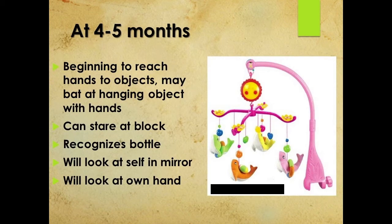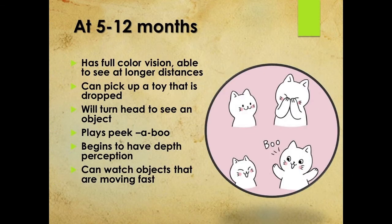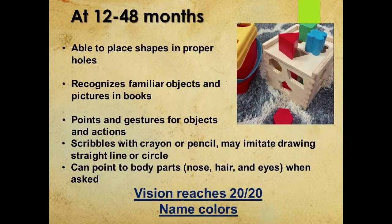At four to five months, the baby becomes much more aware of the environment. They can follow a moving toy or a rolling ball, and hand-eye coordination continues to improve. Control of eye movements and eye-body coordination also continues to improve. Another hallmark feature is that depth perception begins during this period. The baby can pick up a dropped toy, develops color vision, can play peekaboo, and begins to watch fast-moving objects.